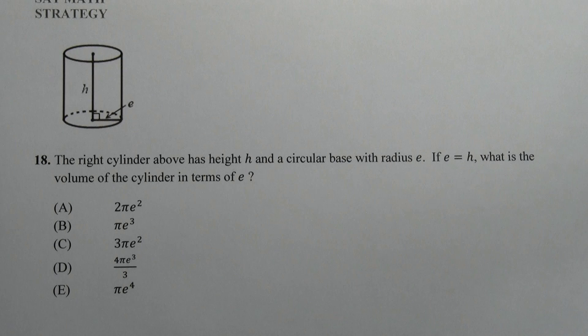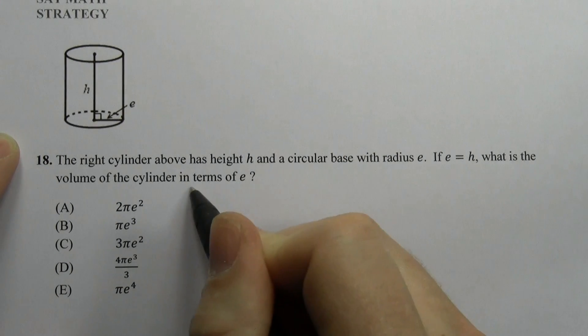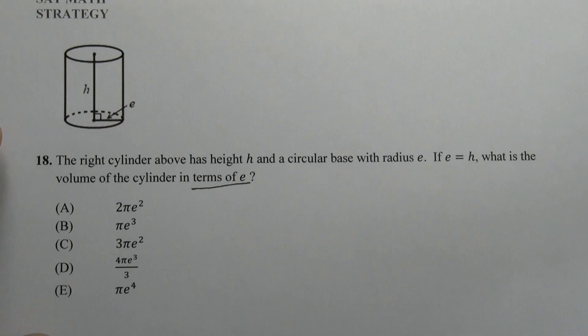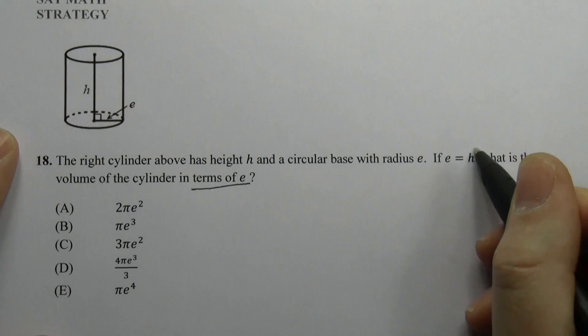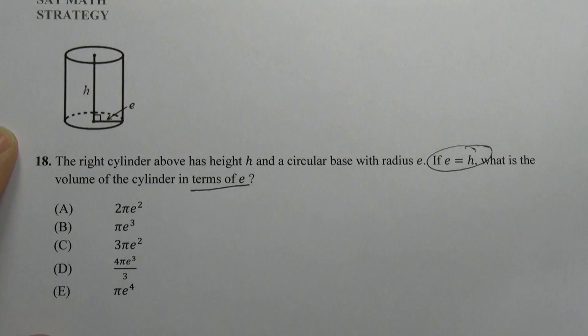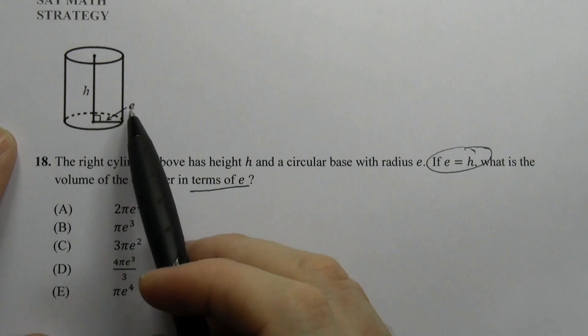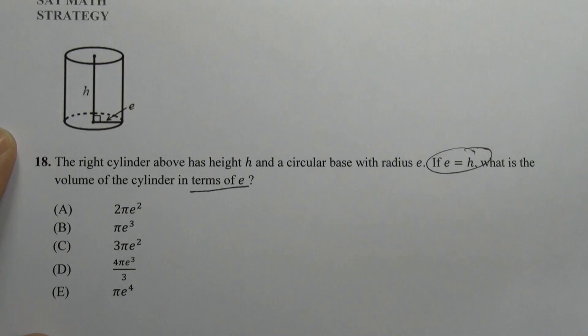Number 18 out of 20, this is a tough question. It says, the right cylinder above has height h and a circular base with radius e. If e equals h, what is the volume of the cylinder in terms of e? So again, we see this phrase 'in terms of,' which means that we can use our own numbers. Now the important thing to remember here is that e equals h.